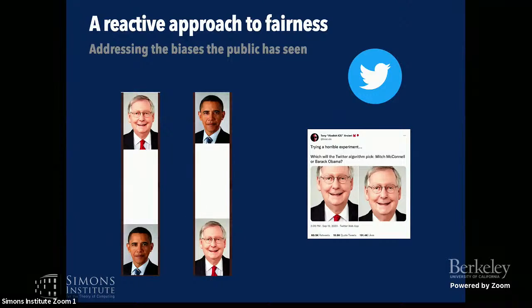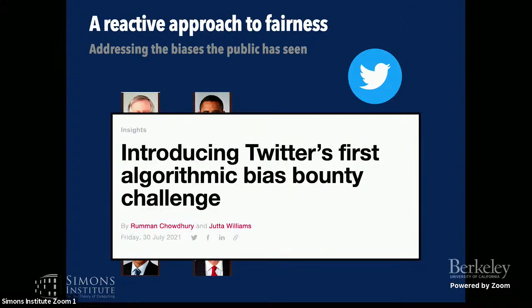Last year, Twitter users discovered that if you upload certain pictures to Twitter, the cropping algorithm decides to show two pictures of Mitch McConnell and omits the fact that Barack Obama is in either of the pictures. Users tested this across a bunch of different images and consistently found that the cropping algorithm was putting forth white faces over black faces, and indicted Twitter for bias in this algorithm. To their credit, Twitter has taken some steps to address the issue and has started a new algorithmic bias bounty challenge where they'll be auditing these algorithms.